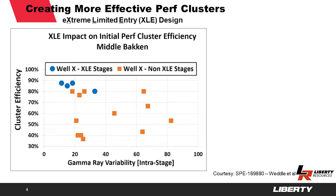What they found is shown here on the left-hand graph, where extreme limited entry stages — shown in blue — typically results in significantly higher perf cluster efficiency than non-extreme limited entry stages. The overall perf cluster efficiency increased from an average of about 60 percent to about 85 percent for the extreme limited entry cases.